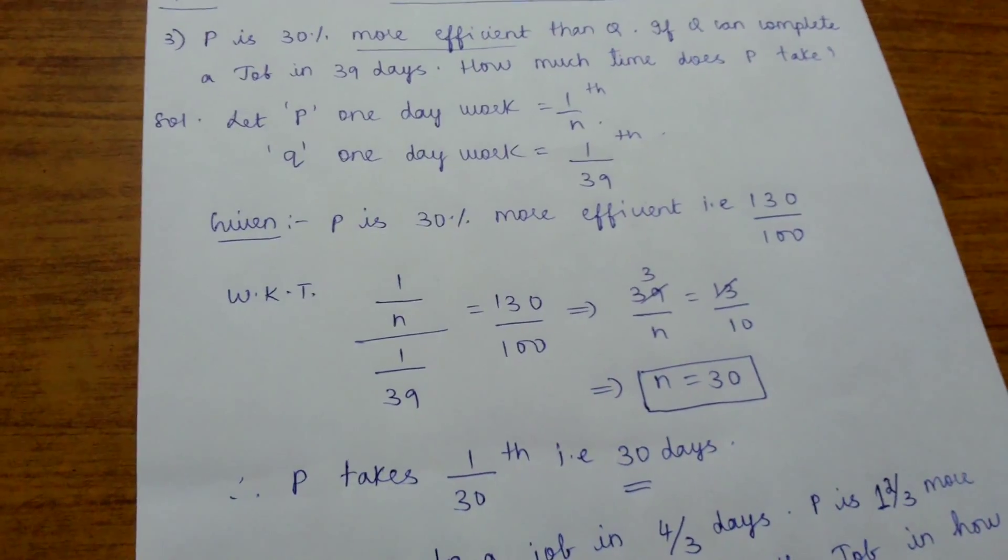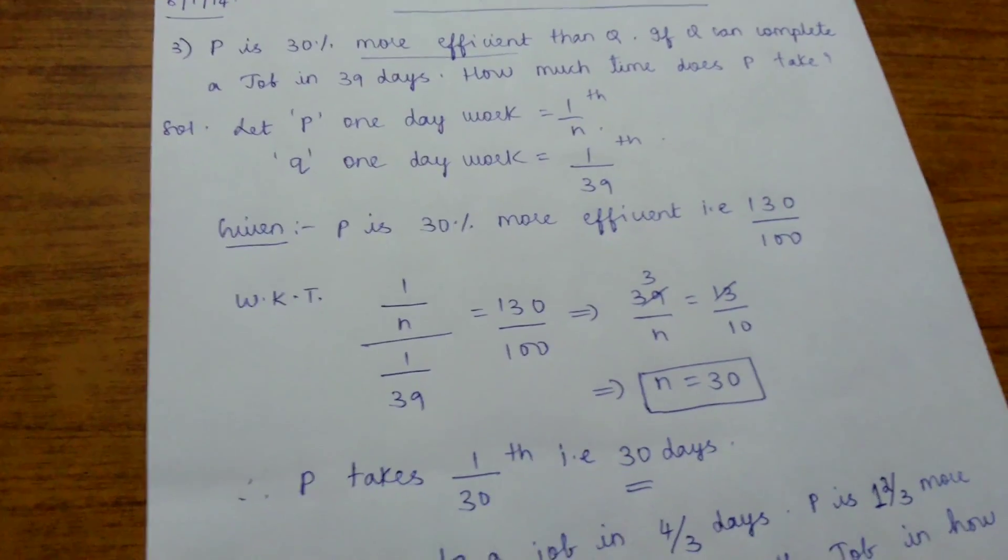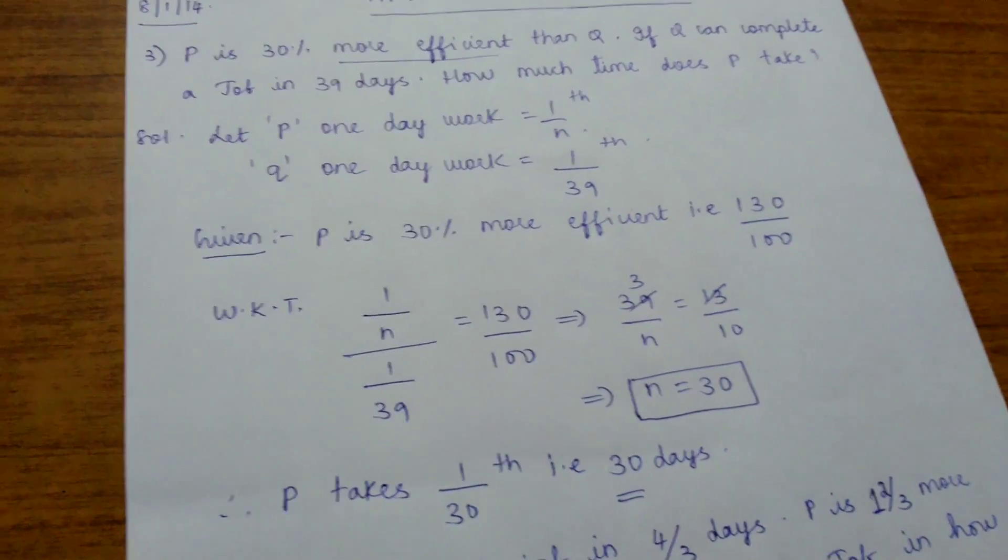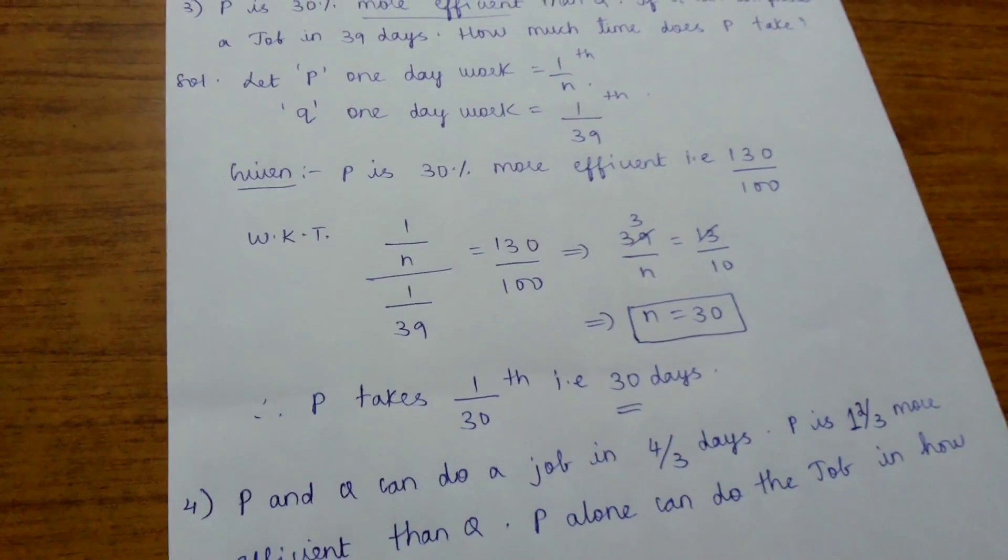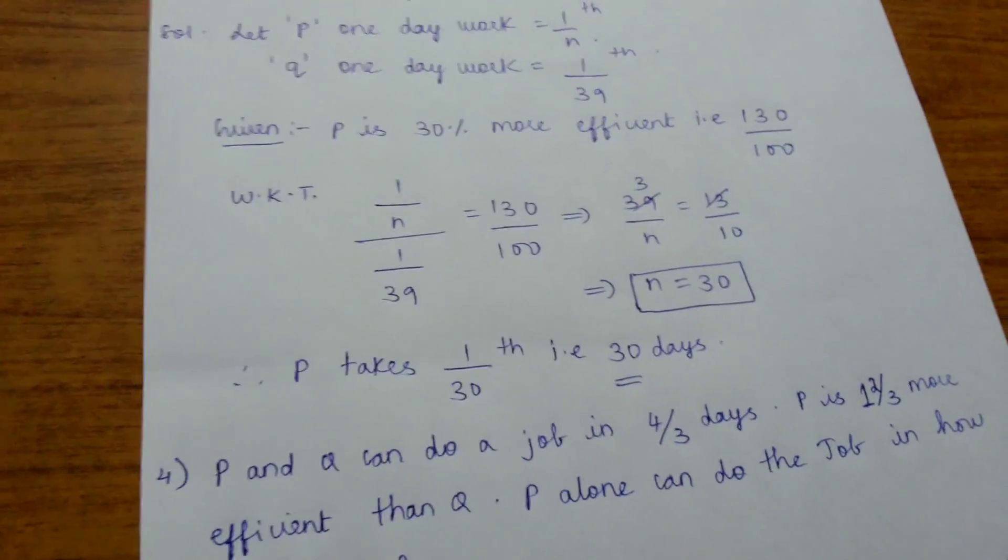Substituting in the formula: one day work of P, that is 1 by N, divided by one day work of Q, that is 1 by 39, equals 130 by 100. We get N equals 30, so P takes 30 days.